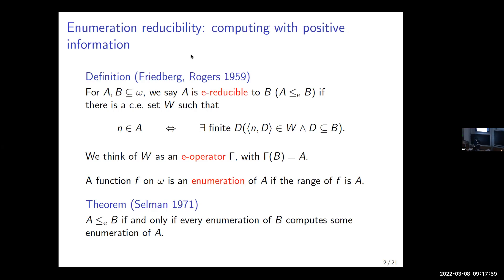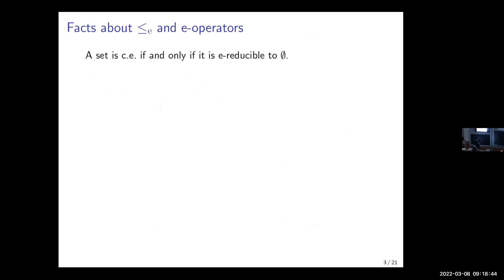We can also think of this in terms of enumerations, as the name suggests. A function f on omega is an enumeration of the set A if the range of f equals A. A set A will in general have many enumerations, and A is reducible to B if and only if every enumeration of B computes some enumeration of A — this is a theorem by Selman. Now, A is c.e. if and only if it is reducible to the empty set.